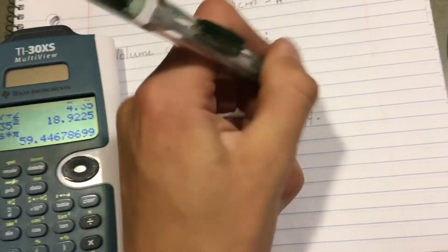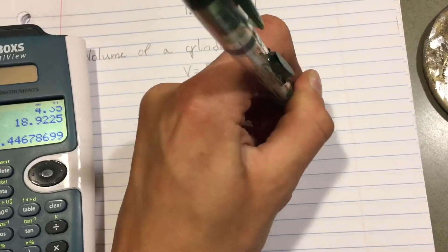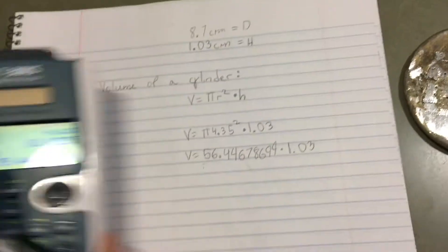Now, for teachers, when they want you to show your work, you don't want to do two stages all in one, but I did do two stages all in one because I can. Okay, I want to multiply that by 1.03 and that will be our volume cubed.